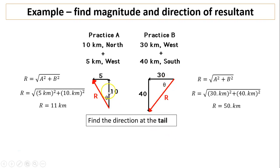What is given to you is opposite and adjacent in both cases. Tan is opposite over adjacent. For practice A, opposite is 5, adjacent is 10, giving 0.5. To find theta, use inverse tan on your calculator. Inverse tan is second tan, giving 27 degrees. For practice B, you should do the same thing, giving 53 degrees.